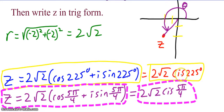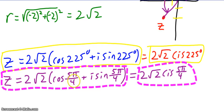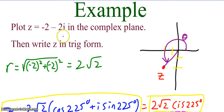I could also write 2 root 2 cis of 225 degrees. You should be comfortable writing the longhand and know the shorthand. We could also use radians — so 2 root 2 times the quantity cosine of 5π/4 plus i sine of 5π/4, or 2 root 2 cis of 5π/4. On a test or quiz, I will specify degrees or radians and will go back and forth. If you distribute the 2 root 2 — cosine of 5π/4 is negative root 2 over 2 and sine of 5π/4 is negative root 2 over 2 — distributing r leads you right back to the standard form: negative 2 minus 2i.